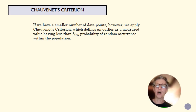Now, if we have a smaller number of data points, our criterion is going to be lower. And so we use what's called Chauvenet's criterion, which defines that criterion as the z-score that is associated with the probability of 1 over 2n.